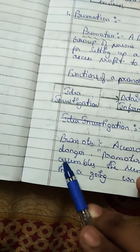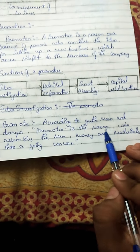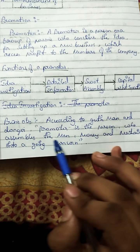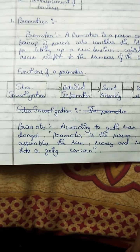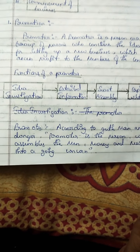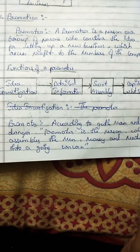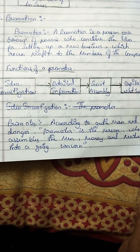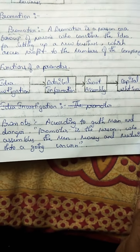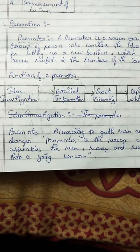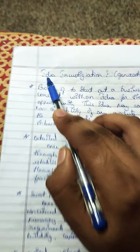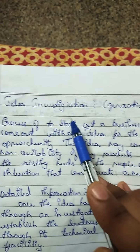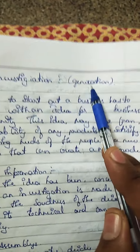According to Grossman and Donger, a promoter is the person who assembles the men, money, and material into a going concern. So according to this definition, a promoter is a person who gathers all resources and everything necessary for a business purpose.